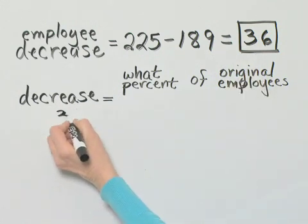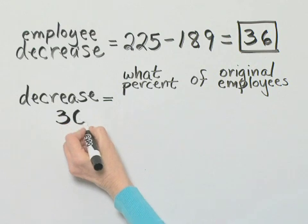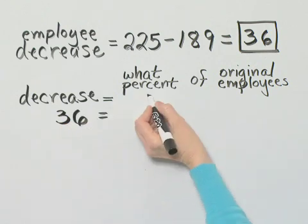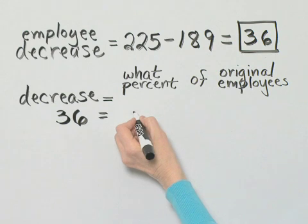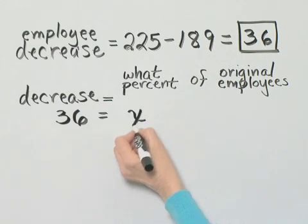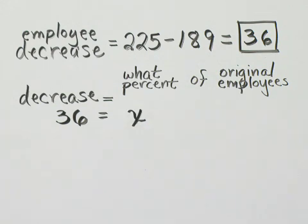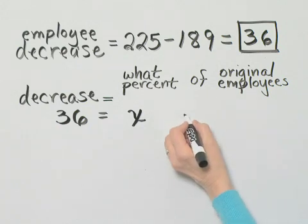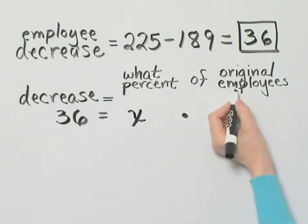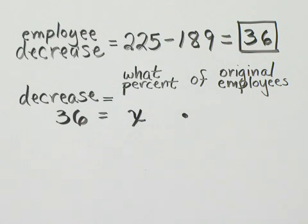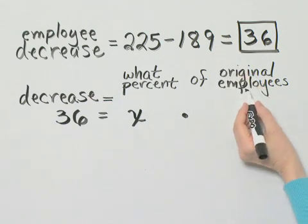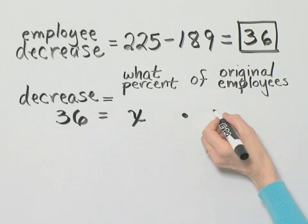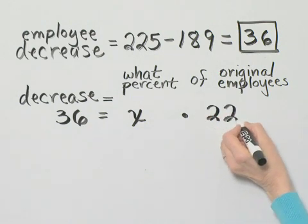That decrease is what percent? That's what we're looking for. So we'll let that be X of, how does of translate? Of translates here to multiplication, original employees. Now remember, originally we had 225, and then it decreased to 189. So the original number is 225.